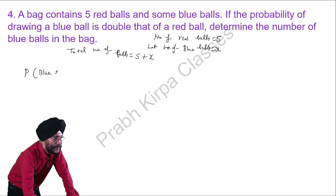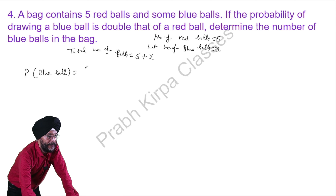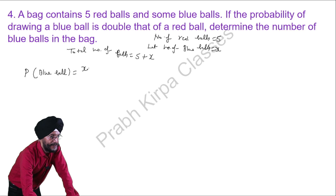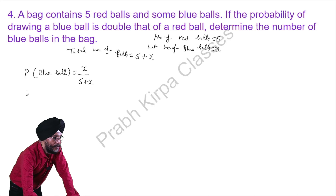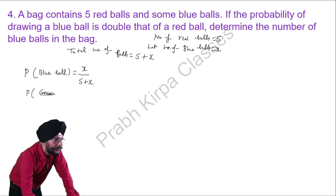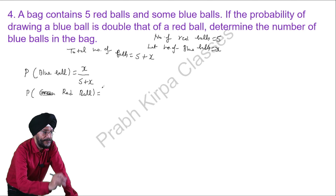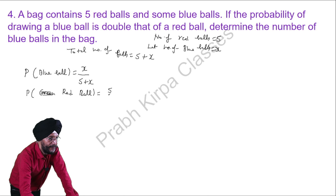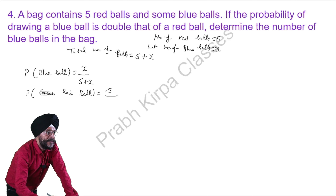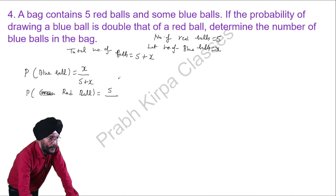The probability of a blue ball equals the number of favorable outcomes — x blue balls — divided by the total number of balls, 5 plus x. The probability of a red ball equals the number of favorable outcomes — 5 red balls — divided by the total, 5 plus x.